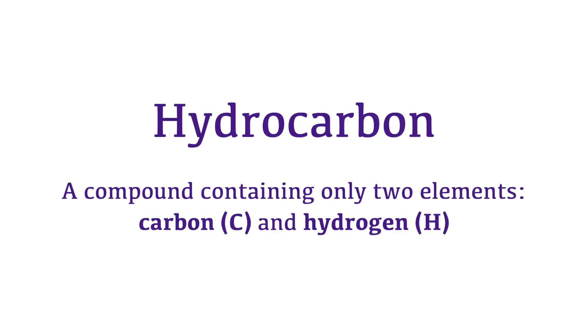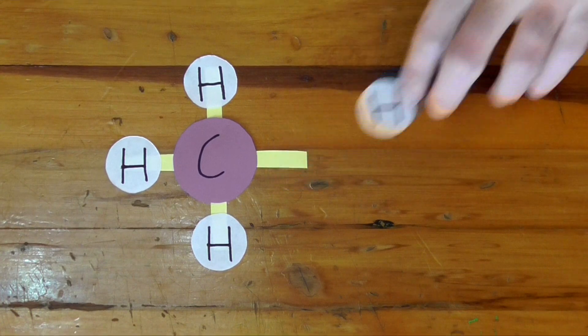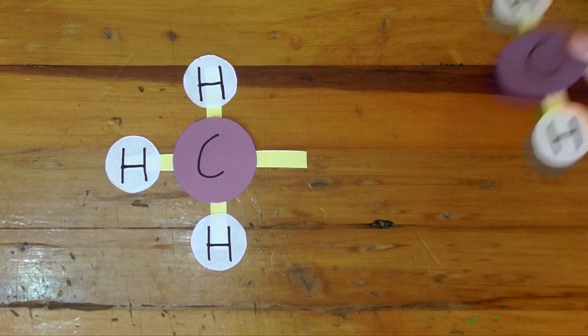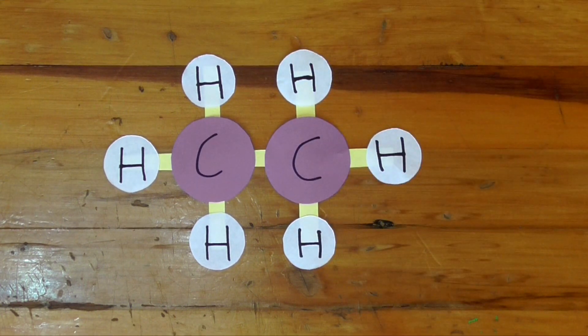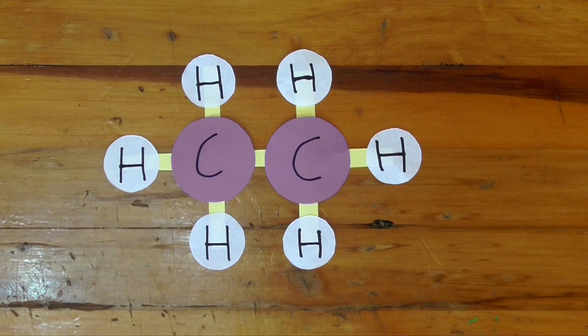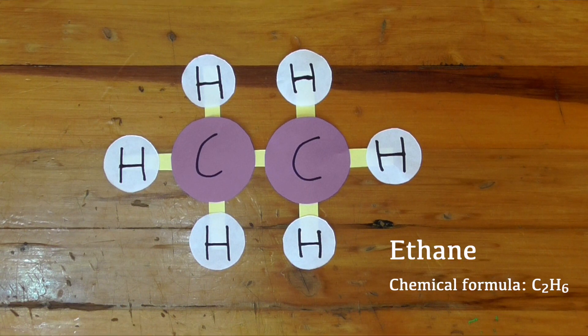Methane is an example of the first type of organic compound, a hydrocarbon. As the name suggests, this is a compound that's entirely made up of hydrogen and carbon. More complex hydrocarbons can be made by replacing one of those hydrogen atoms with more carbon. Two carbon atoms, each bonded to three hydrogen atoms and to each other, form ethane.